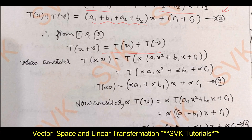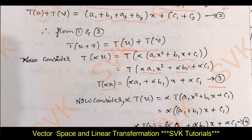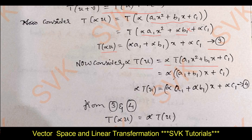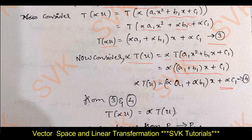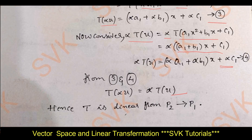Now consider T(αu): αu = αa₁x² + αb₁x + αc₁. Applying the definition gives T(αu) = (αa₁+αb₁)x + αc₁ — call this equation 3. Then αT(u) = α·[(a₁+b₁)x + c₁] = (αa₁+αb₁)x + αc₁ — call this equation 4. Comparing equations 3 and 4: T(αu) = αT(u). Hence T is linear from P2 to P1.